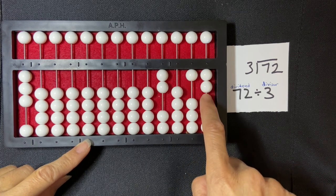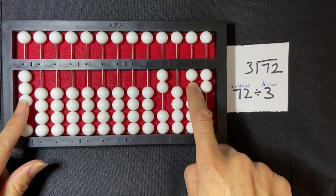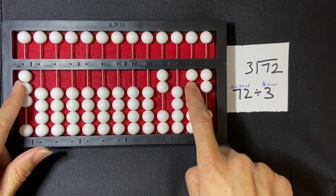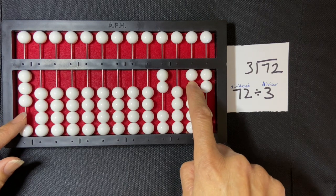So 10 and 2, so I have 12. So I'm going to compare again my divisor with the first number in my dividend, and this time it's larger than the first number in my dividend.